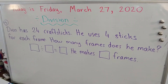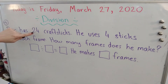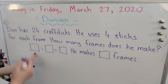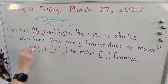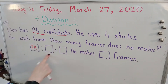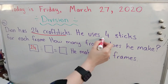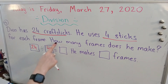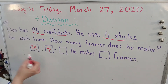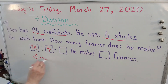Number five. Dion has 24 craft sticks. He uses four sticks for each frame. How many frames does he make? So let's look at what we know. We know Dion has 24 craft sticks — and what do we always start with? Our total. And our total is 24 craft sticks. I'm going to divide it by the number of craft sticks he uses for each frame, which is four sticks. And when I divide 24 by four, I'm going to find out how many frames he makes. If he were to use four sticks for each frame, that's the first frame — four more is eight, eight sticks he used.